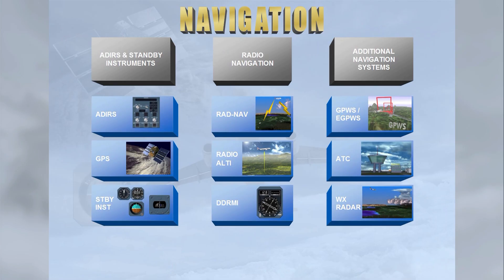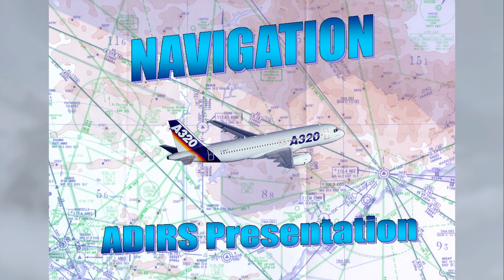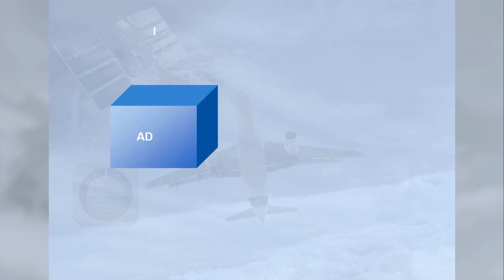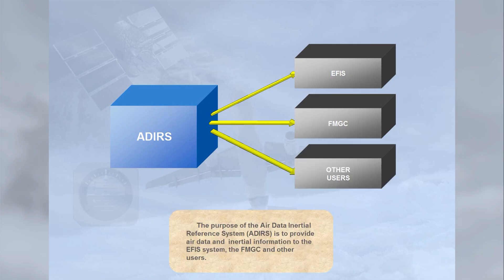This completes the introduction to the subjects that will be covered in the following modules. The purpose of the Air Data Inertial Reference System, ADIRS, is to provide air data and inertial information to the EFIS system, the FMGC, and other users.